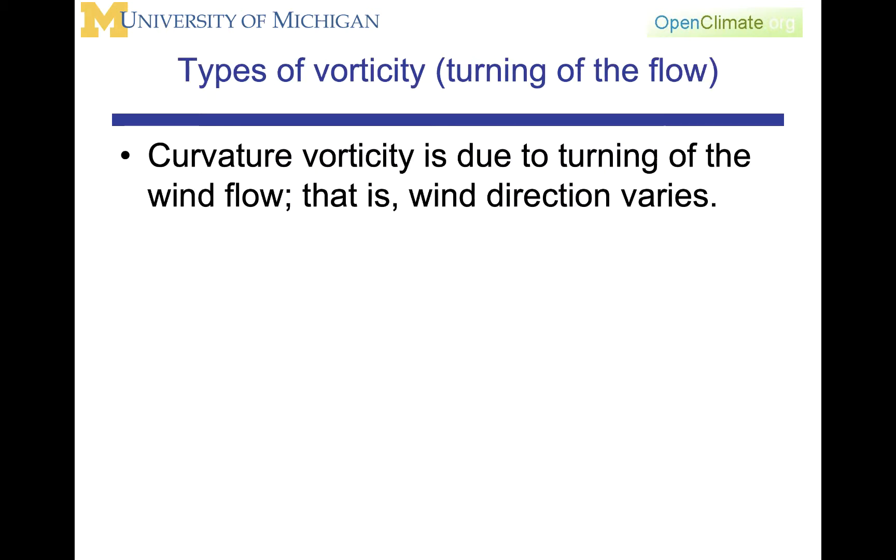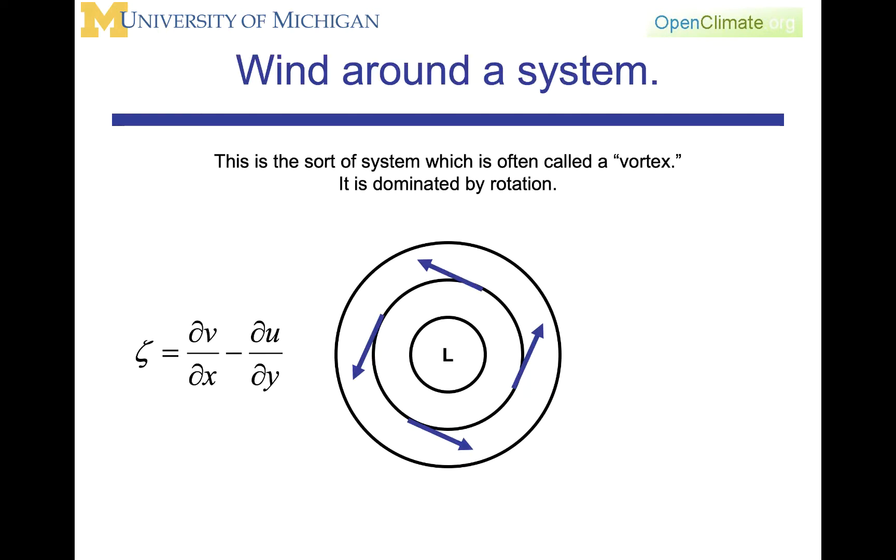If we look in a little bit more detail at the relative vorticity, then we could say that there are two types. One, there is curvature vorticity, which is due to the turning of the wind flow, that is, the wind direction changes. That's this intuitive feeling of circular flow around a low pressure system, this closed circulation that you might associate with a hurricane or even with a tornado, though the dynamics of the two are very different. There is a lot of rotation in each of those flows. This is called a vortex, and it is dominated by this rotational flow.